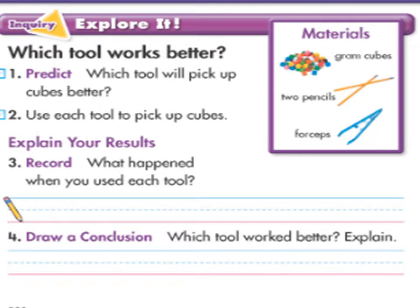Here we have an experiment: which tool works better? Materials: gram cubes, two pencils, forceps. Number one — predict: what do you think? Which tool will pick up cubes better? Number two — use each tool to pick up cubes.